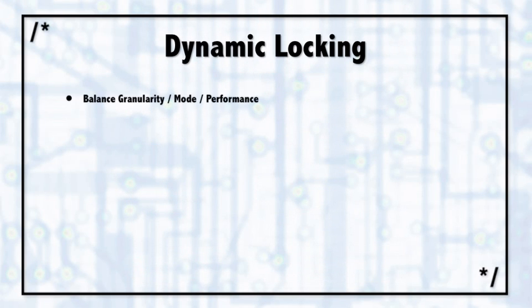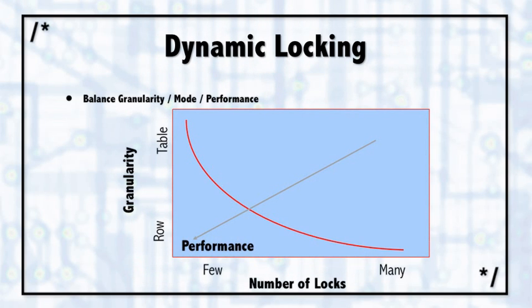SQL Server has a lock manager which will actually watch what's happening with the locks and try to adjust the granularity and the number of locks. For example, if SQL Server sees that you're getting lots of row locks, it may choose to escalate those row locks to a page lock. And if you're getting lots of page locks, instead of handling 100 page locks, it may decide to escalate those to a table lock.